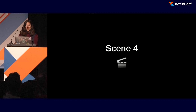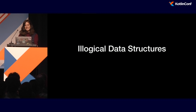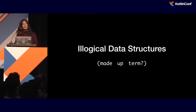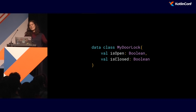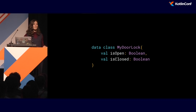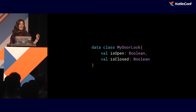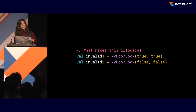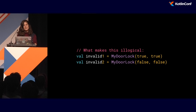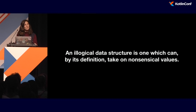And it leads us to scene four — probably my favorite of all of them: illogical data structures. Specifically, what is the idea of an illogical data structure? Here is the simplest, most rudimentary example you could possibly get: you have a lock with a field for being open and a field for being closed. This works out for you sometimes, but it quickly goes awry when you get Schrödinger's lock — where you can have it be both open and closed at the same time, or neither open nor closed. Illogical data structures are data structures that allow nonsensical values — for instance, a lock being both open and closed.